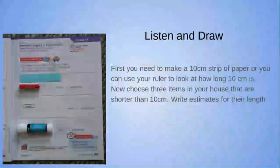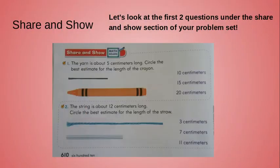Let's move on. The next section in your workbook is 'Share and Show.' Let's look at the first two questions. Number one: the yarn is about 5 centimeters long — circle the best estimate for the length of the crayon. In this example, the yarn is my known length; it's 5 centimeters long.